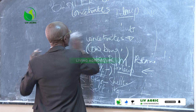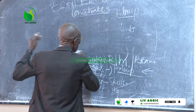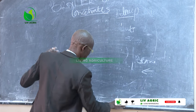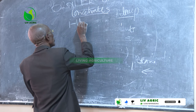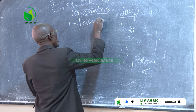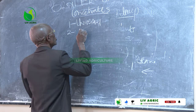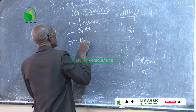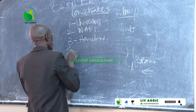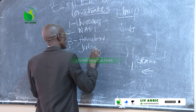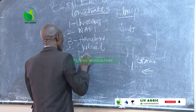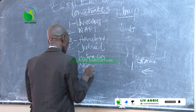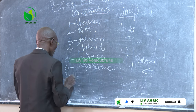Within Uganda, I'm going to show you the types of concentrates we are used to. Number 1 is what we call the Universal. Number 2, Wafi. Number 3, Hendrix. Number 4, Jubai. Number 5, Introduction. Number 6, Neoscience. Number 7, Comfort. And there are more, but these are the major ones.